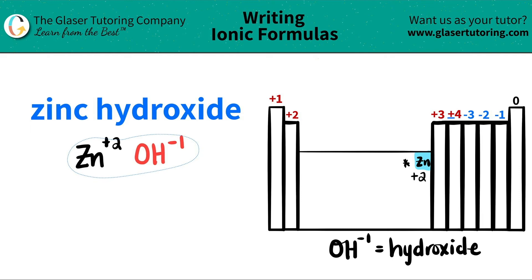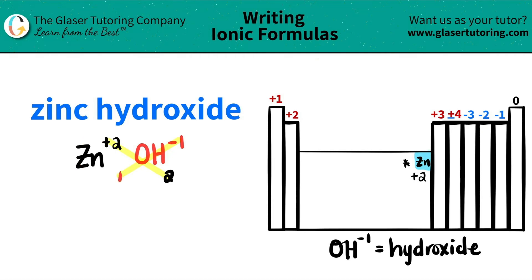Since we have both components and we have the charges, we do this little trick where we take the charges and crisscross them to see how many of each I need for my formula. This plus two crisscrosses down telling me that I need two hydroxides, and the one crisscrosses down telling me that I need one zinc. When you do this crisscrossing, don't worry about the positives and negatives — we're only looking at the subscripts.